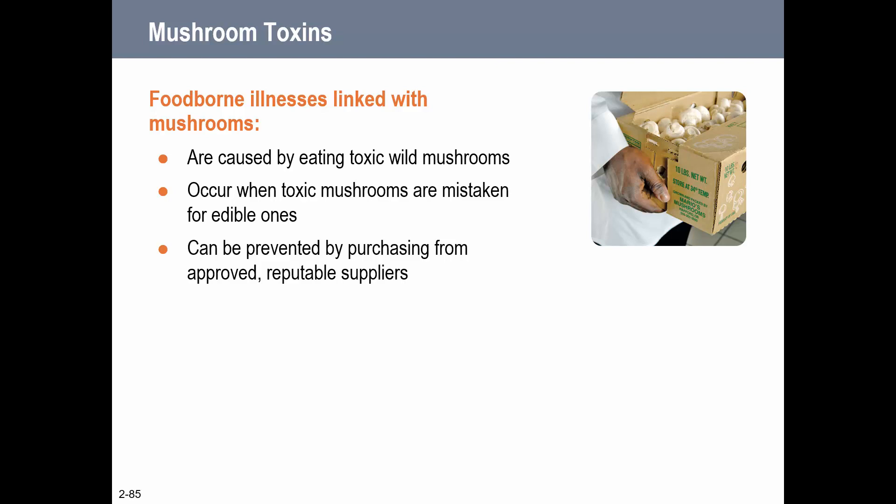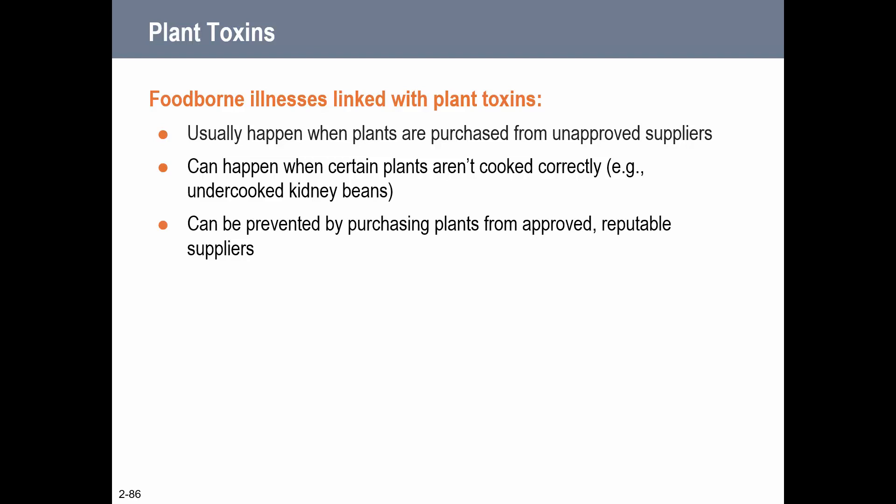Mushroom toxins come from eating toxic wild mushrooms. The biggest concern is that amateur mushroom hunters don't know the difference between safe and toxic varieties - for example, in Missouri there's the morel mushroom everyone hunts, and a false morel that looks very similar but is toxic. Approved reputable suppliers are essential. Some other plants can have toxins too - undercooked kidney beans can have toxin, and there are wild plants that are toxic. Purchase plants from approved reputable suppliers to prevent those risks.